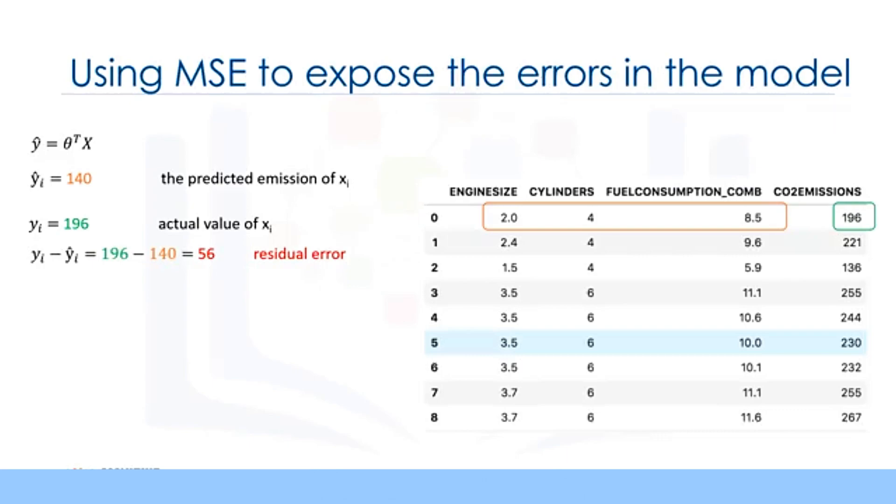This is the error of our model only for one row or one car in our case. As is the case in linear regression, we can say the error here is the distance from the data point to the fitted regression model. The mean of all residual errors shows how bad the model is representing the dataset. It is called the mean squared error or MSE. Mathematically, MSE can be shown by an equation. While this is not the only way to expose the error of a multiple linear regression model, it is one of the most popular ways to do so.